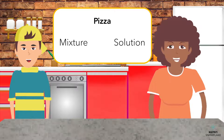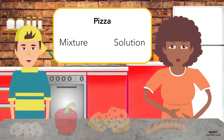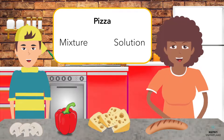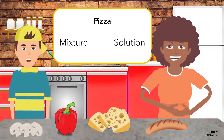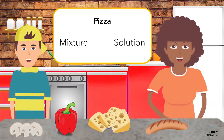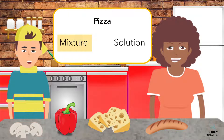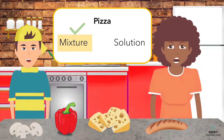Now for our main course. We are making pizza. We will have cheese, sausage, mushrooms, and peppers on our pizza. Do you think it's a mixture or a solution? I think it is a mixture — I can pick off the ingredients I don't enjoy, like mushrooms. Yuck! You got it.